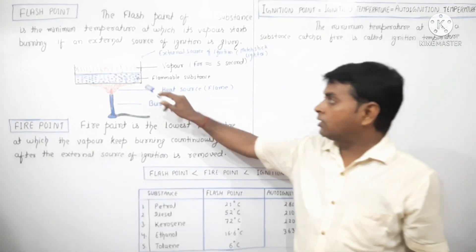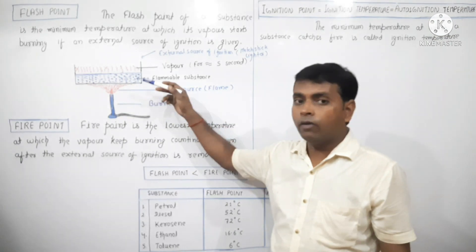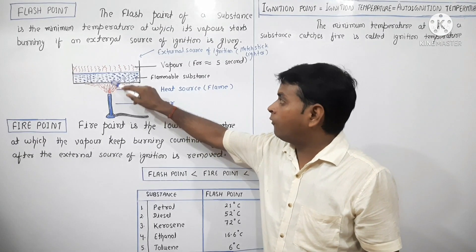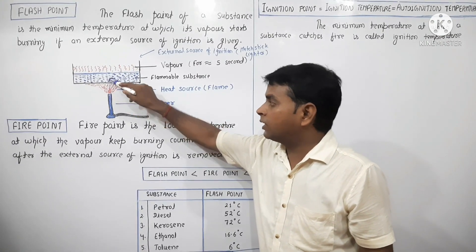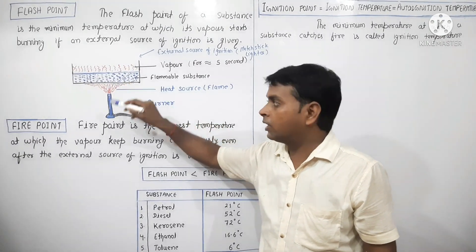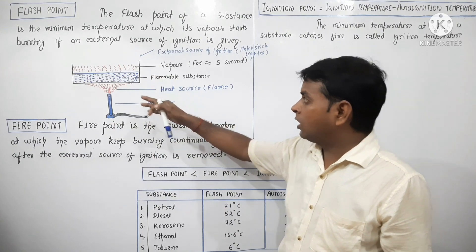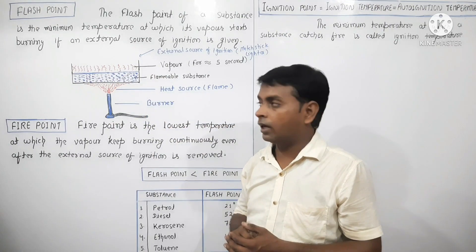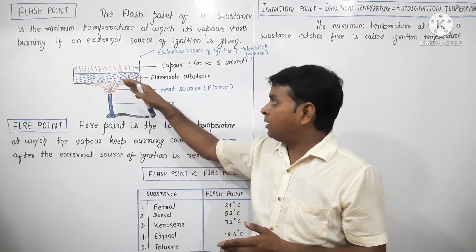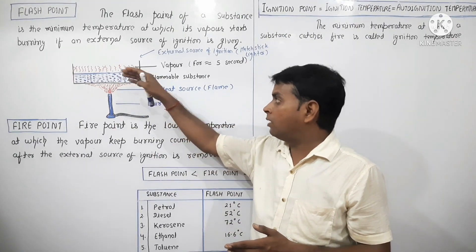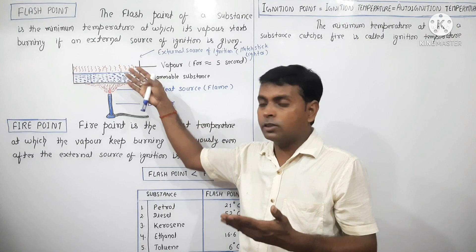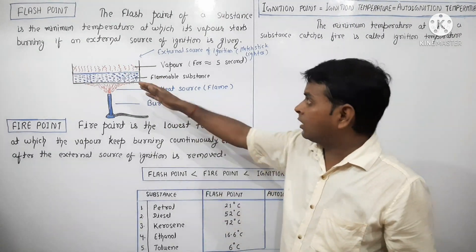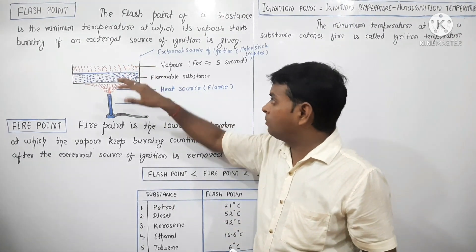If the fuel or inflammable material is at a temperature higher than the flash point, it will produce more vapor. The rate of evaporation increases, leading to continuous evaporation and sustained burning — this is what we call the fire point.